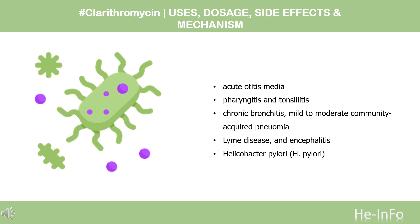Clarithromycin is used as an alternative medication for the treatment of acute otitis media caused by H. influenzae, M. catarrhalis, or S. pneumoniae in patients with a history of type I penicillin hypersensitivity. Also for the treatment of pharyngitis and tonsillitis caused by susceptible Streptococcus pyogenes, as well as respiratory tract infections including acute maxillary sinusitis, acute bacterial exacerbations of chronic bronchitis, mild to moderate community-acquired pneumonia, Legionnaire's disease, and pertussis. Other indications include treatment of uncomplicated skin infections, Helicobacter pylori infection, duodenal ulcer disease, Bartonella infections, early Lyme disease, and encephalitis caused by Toxoplasma gondii in HIV-infected patients in conjunction with pyrimethamine.